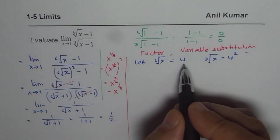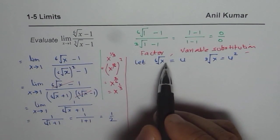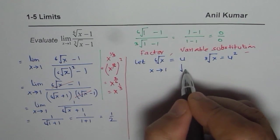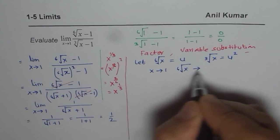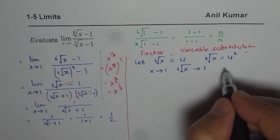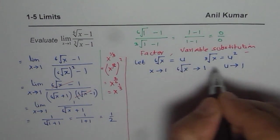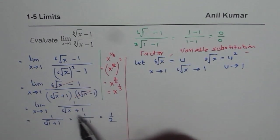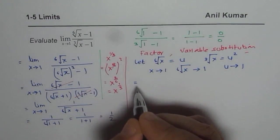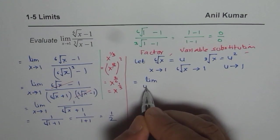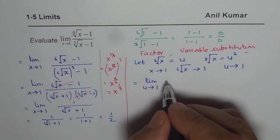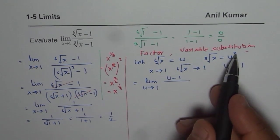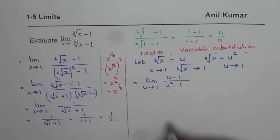And another important thing which you have to do is what happens when x approaches 1? When x approaches 1, in that case, the 6th root of x also approaches 1 and therefore u approaches 1. You get the point. So substituting u for 6th root of x will change the situation and we can rewrite our limit as limit u approaches 1, 6th root is u, so we get u minus 1 in the numerator and in the denominator, cube root is u square, so we get u square minus 1. You get the idea.